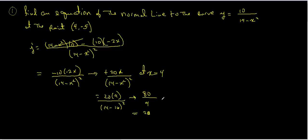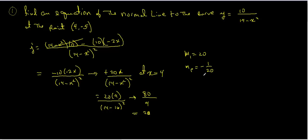So the derivative of the function at x equals 4 is 20. But we want to find the equation which is perpendicular to the tangent line, so if m₁ equals 20, then the perpendicular slope would be the negative reciprocal of that. Then we write a linear equation at the point (4, -5).